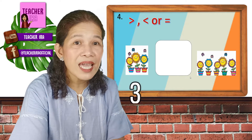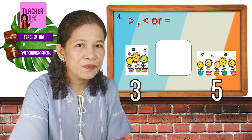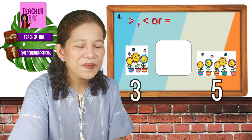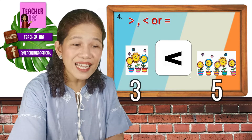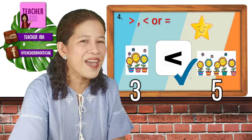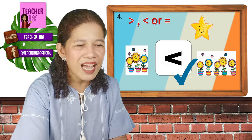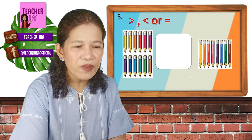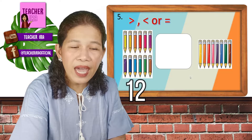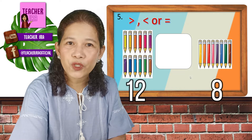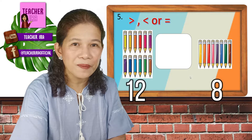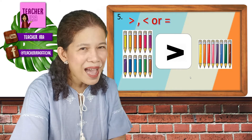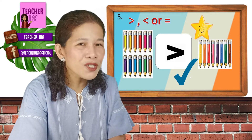Number 4: 3 and 5. We had this in the example a while ago. Let me see if you can still remember. Yes, that's less than. Correct, correct, correct. And a star for you. Last number: 1, 2, 3, 4, 5, 6, 7, 8, 9, 10, 11, 12 and 8. 12 and 8 — greater than, less than, or equal? It's greater than. Very good. Check, check, and star.